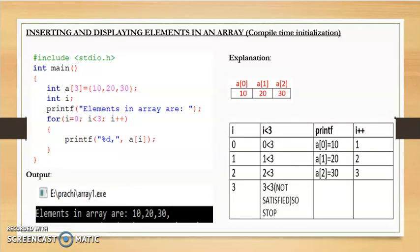Next we will see how to insert and display elements with the help of compile time initialization. Compile time initialization means we insert the values before we execute the code. The syntax was already explained in the last video, arrays part A. Here we will see how we insert and display elements using compile time initialization with the help of a code. Every time I explain code, I will explain with the help of an example. So let's see the code.